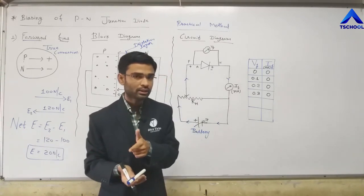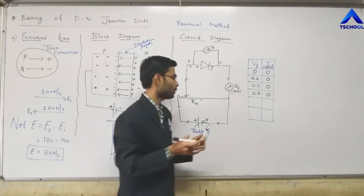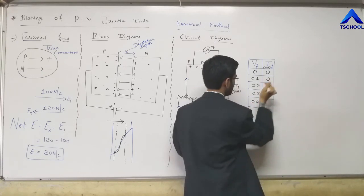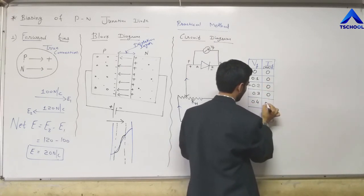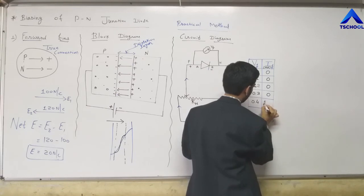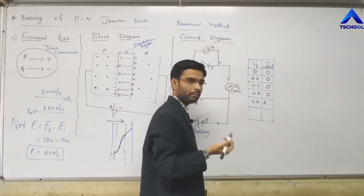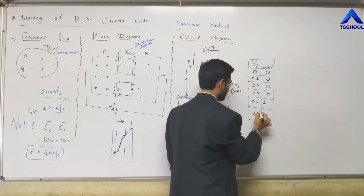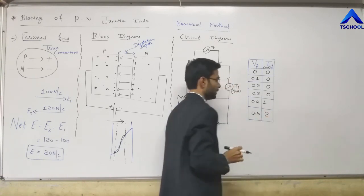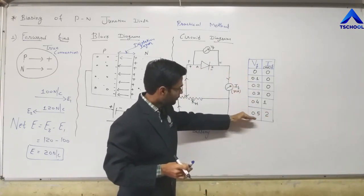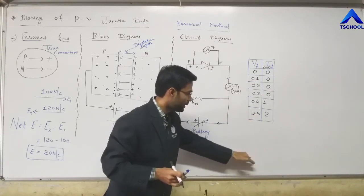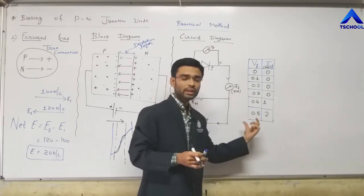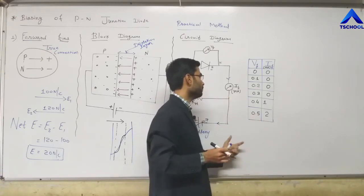We must apply more than 0.3 V for conventional current to flow. When the external voltage is 0.4 V, then 0.4 − 0.3 = 0.1 V net, and current is set up in the device — for example, 1 mA. At 0.5 V the current is 2 mA, and as we increase the voltage to 0.6, 0.7, 0.8 V, the current increases to 3, 4, 5 mA, and so on.